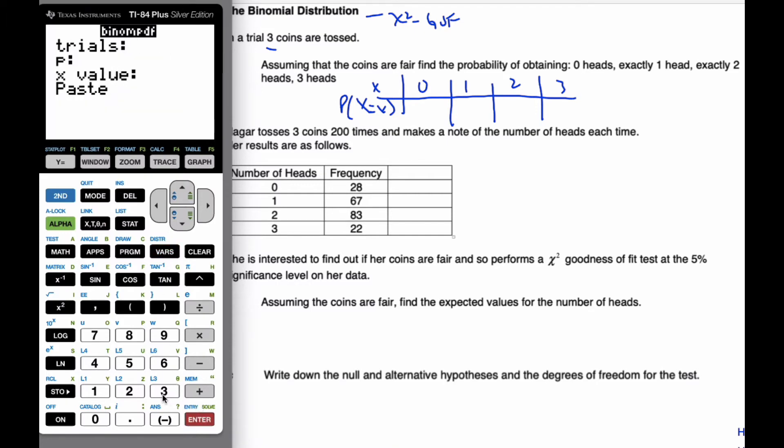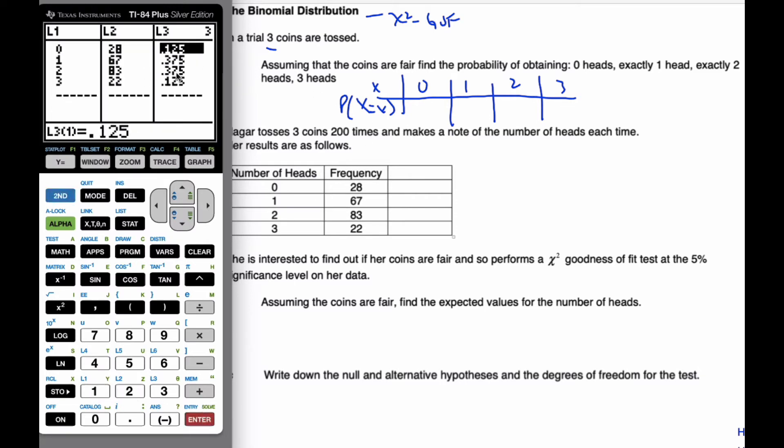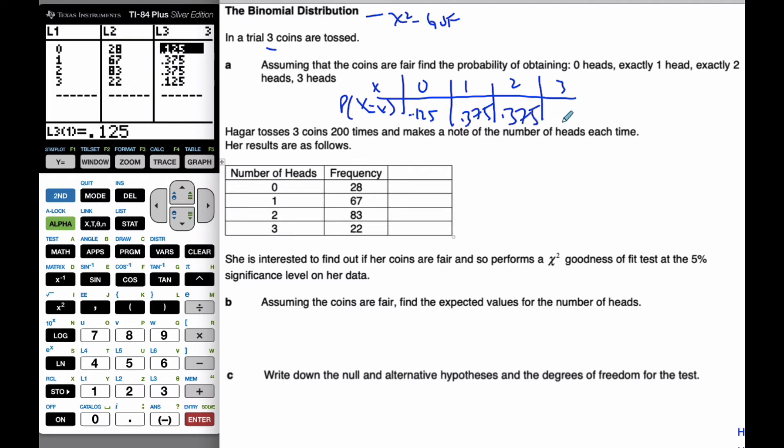And I know there are three trials. My probability of a head is a half, and I'm going to make my x values L1, and I put them in there, and I end up with this particular scenario: one eighth, three eighths, three eighths, and one eighth.